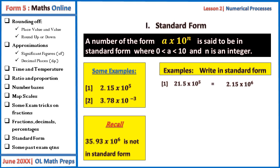Or you have to add times 10 to the power 1. That will give us 2.15 times 10 to the power 5 times 10 to the power 1, which is times 10 to the power 6.